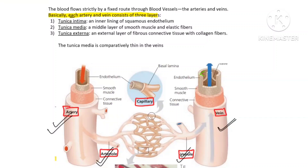First of all, the innermost layer is tunica intima — the name tells us it is the innermost. It is made up of squamous epithelium, and since it is inside a blood vessel, we call it endothelium rather than epithelium. The cells are squamous — flat — because diffusion has to occur here. These cells are the ones in direct contact with the blood.